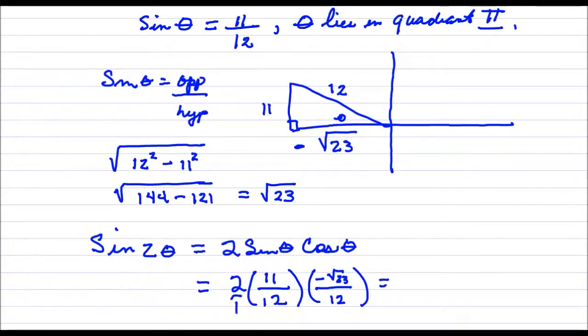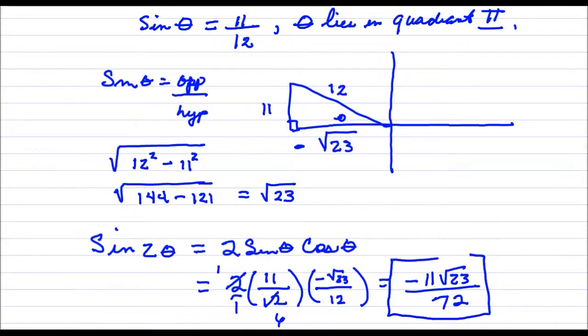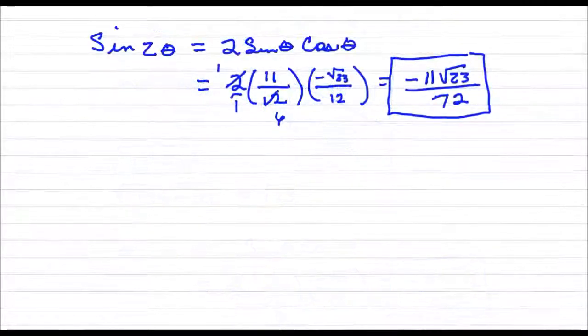That is 2 over 1. So I am going to go ahead and simplify that right here. 1 and 6. So that is going to leave me with 11 times negative square root of 23. That is negative times the square root of 11 times the square root of 23 all over 6 times 12. That is 72. And that is the simplified answer. So we are done with part A.